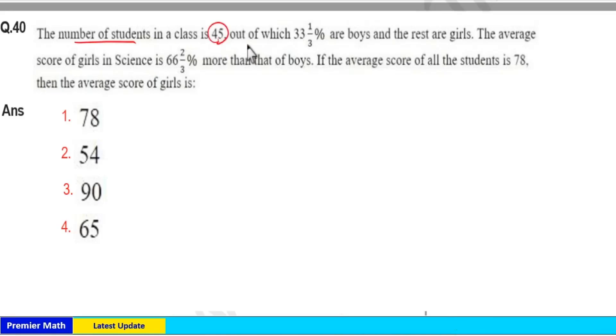The number of students in a class is 45, out of which 33⅓% are boys and the rest are girls. The average score of girls in science is 66⅔% more than that of boys. If the average score of all students is 78, then the average score of girls is...